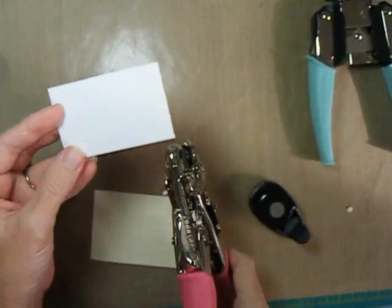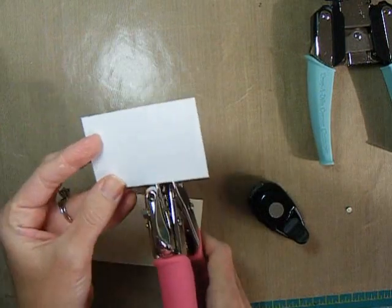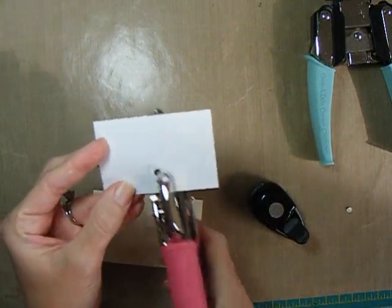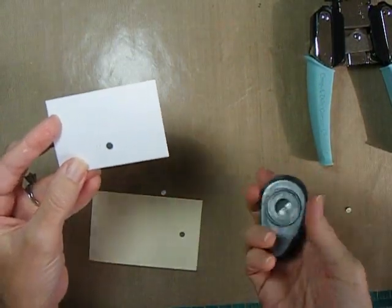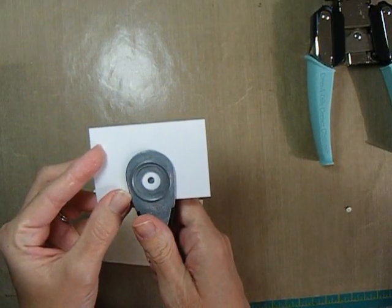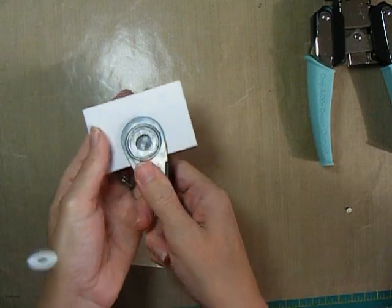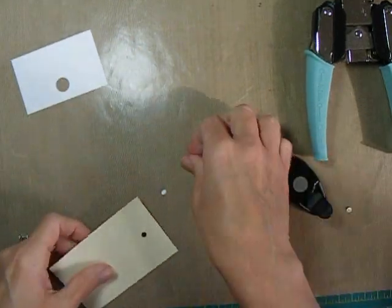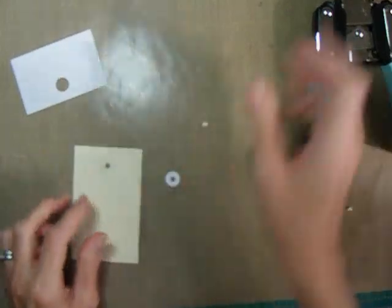I'm going to punch the same hole in this scrap piece of white paper. And then I'll need a 1½ inch circle punch and center the hole that I just punched in the circle punch. That will create my reinforcement for the tag.